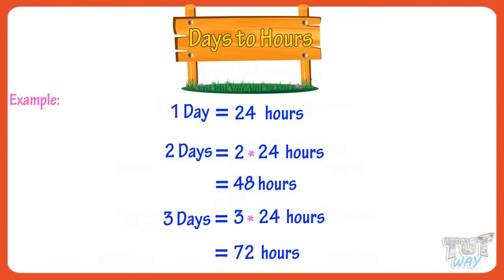So kids, you can convert days to hours by multiplying the number of days with 24.